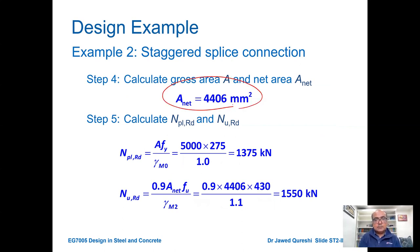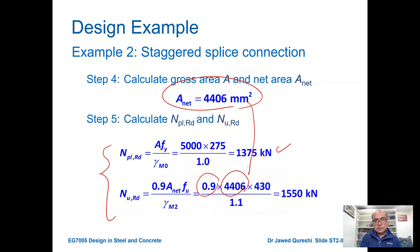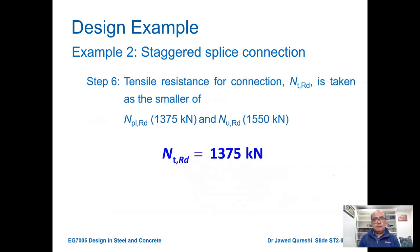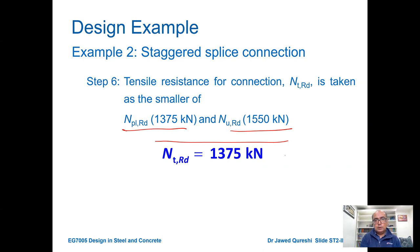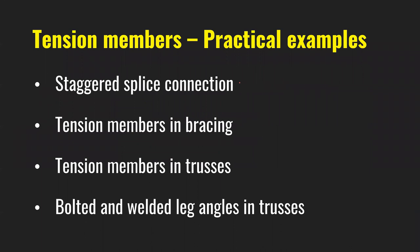With A-net determined, we put it into the two formulas. NPLRD = A × FY / γM0 = 1375 kN. NURD = 0.9 × A-net × FU / γM2 = 0.9 × 4406 × 430 / γM2 = 1550 kN. We choose the smaller of the two: NPLRD = 1375 kN and NURD = 1550 kN, so the tensile resistance of the plate is 1375 kN. The first example is done.